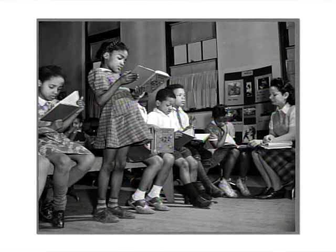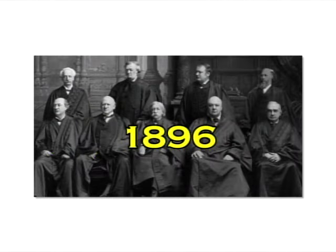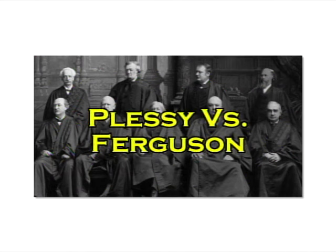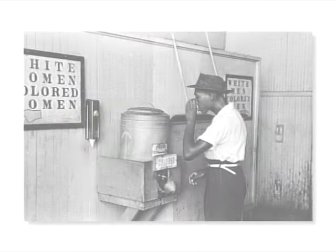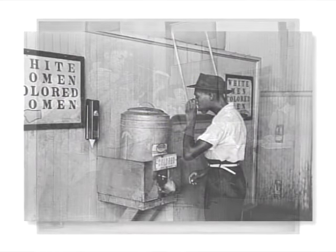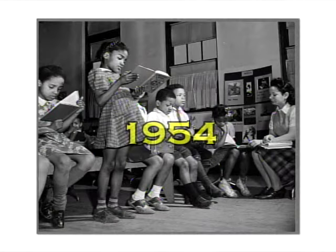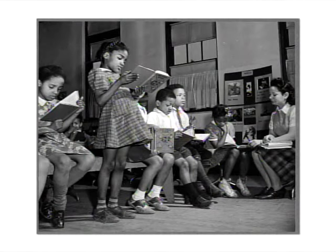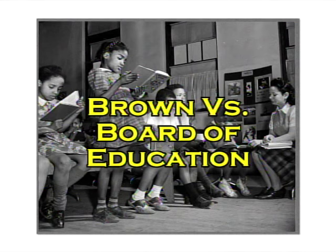The struggle for education was hard fought as well. In 1896, the U.S. Supreme Court made a landmark decision in the case of Plessy v. Ferguson. They upheld that racial segregation was legal, as long as all parties were treated equally. Of course, equal was hardly ever the case. By 1954, the question of separate but equal was again raised in the case of Brown v. the Board of Education.